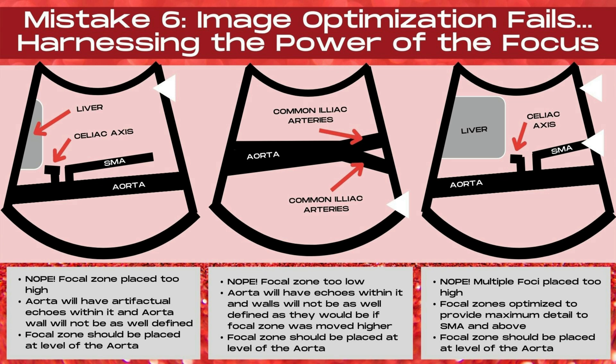In the middle image, the focal zone is too low — the aorta will have artifactual echoes and walls that are not well defined. In the image to the far right, multiple foci are used, which is fine as long as frame rate is not a concern. However, the focal zones are optimized for the SMA and above rather than the aorta — both are too high. The lowest foci should be placed at the level of your area of interest, which is the sagittal aorta.